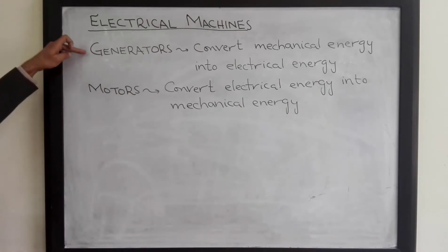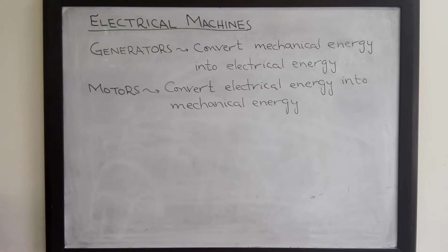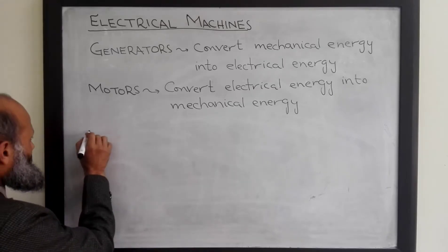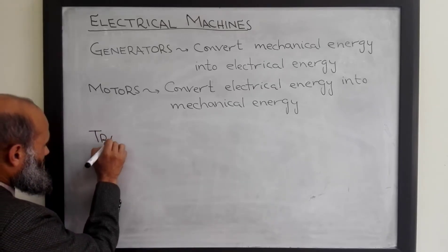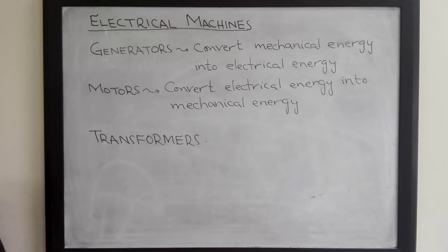The working of both generators and motors is based upon magnetic fields. There is another associated electrical machine whose working is also based upon magnetic fields, and these machines are called transformers. Transformers convert electrical energy at one voltage level into electrical energy at another voltage level.